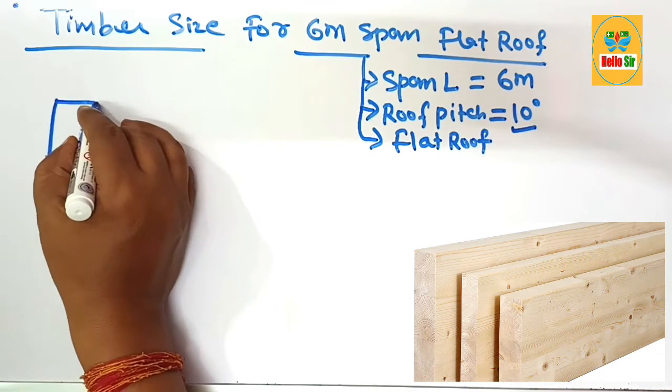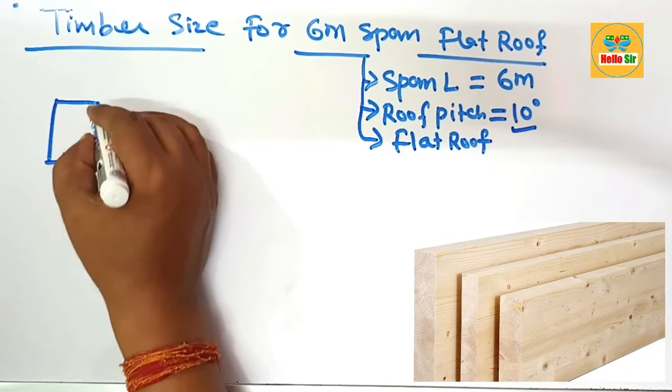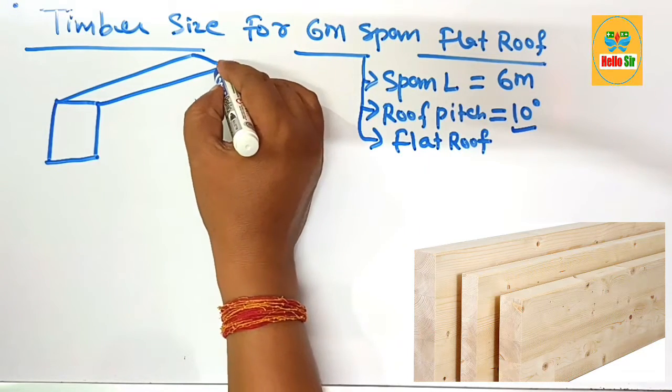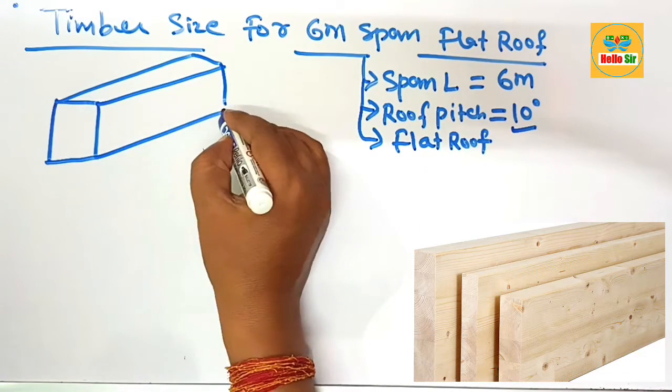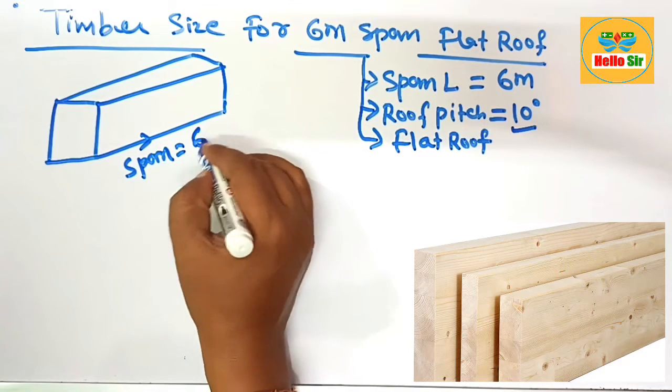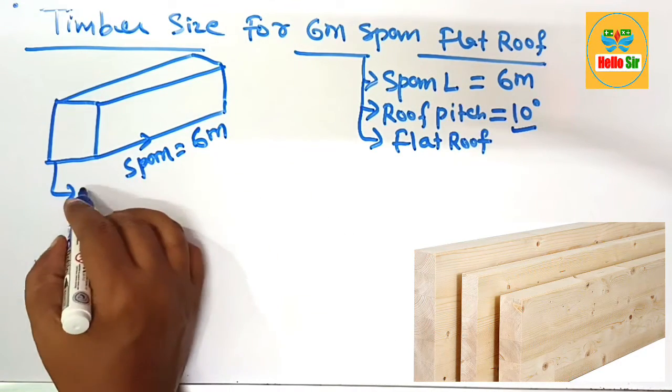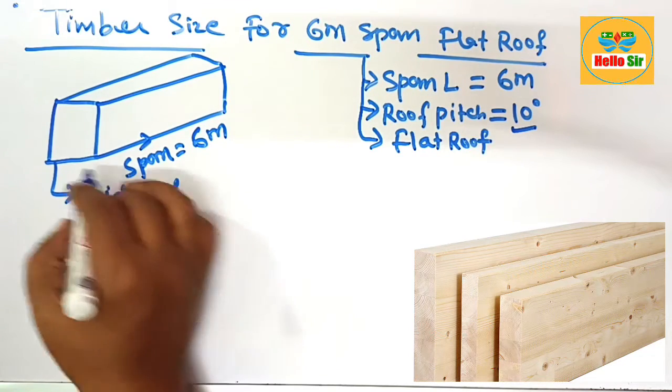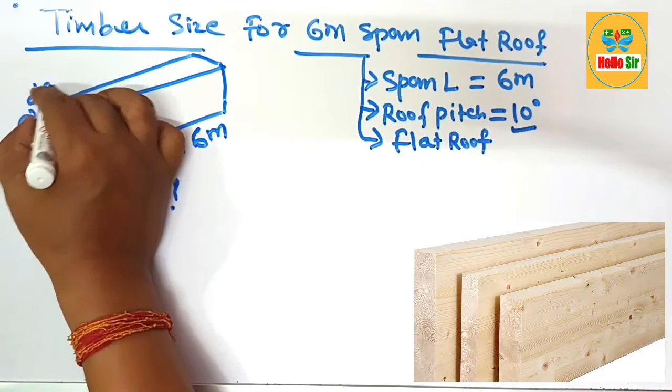Here we make a rough diagram to understand about the different dimensions of the joist. Suppose this one is a rough diagram, this one is a span length, you have given 6 meter and this one is the width section you have to figure out and this one is the depth section.